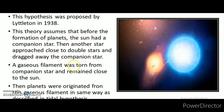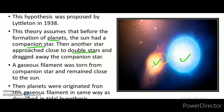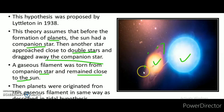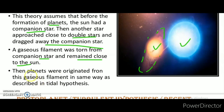The binary star hypothesis is also very similar. It assumes that before the formation of planets, the sun had a companion star. The two stars approached each other like a double star, and a gases filament was torn from the companion star and remained close to the sun. Planets then originated from this gases filament, in the same way as in the tidal hypothesis.